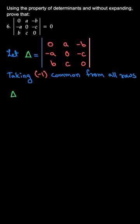If we take minus one common from all three rows we'll get minus one times minus one times minus one which is ultimately minus one to the power three, that is minus one itself. So we can write minus one outside and these as our determinant.